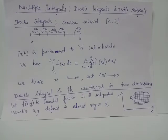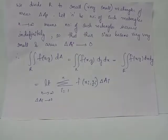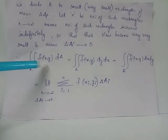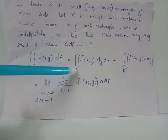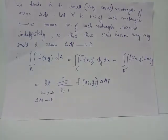This leads to delta Ai approaching zero. When we increase the number of sub-regions partitioning region R, the areas delta Ai approach zero. At this limiting case, when n tends to infinity, we have the double integral over R of f of xy dA, which can also be written as double integral over R of f of xy dy dx, which also equals the double integral over R of f of xy dx dy.